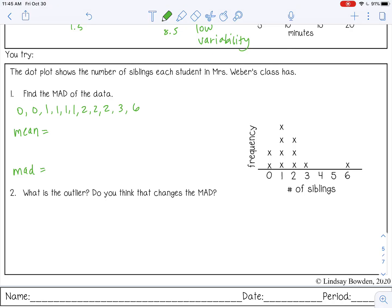So I got a mean of 1.73 and a MAD of 1.16, which is pretty low.